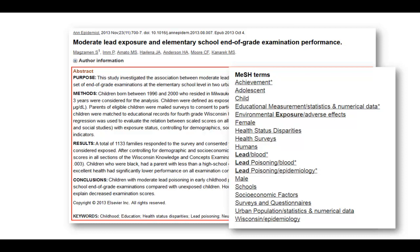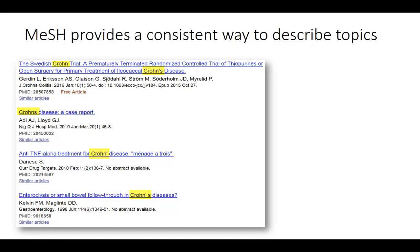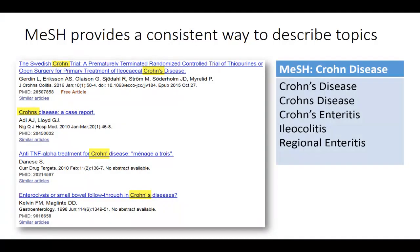MeSH provides a consistent way to describe topics. For instance, authors are not always consistent with disease or drug names. One example is Crohn's disease — a MeSH term of Crohn's disease can be used to search for various spelling variations or different names for this disease.